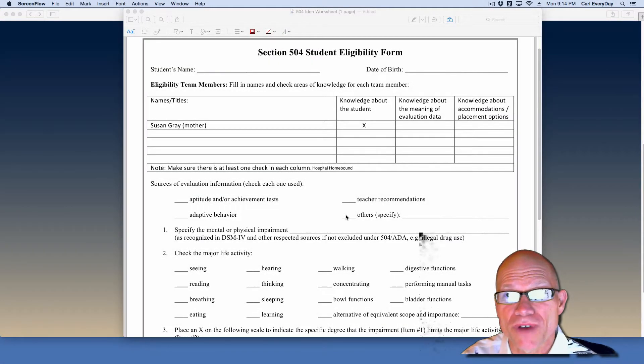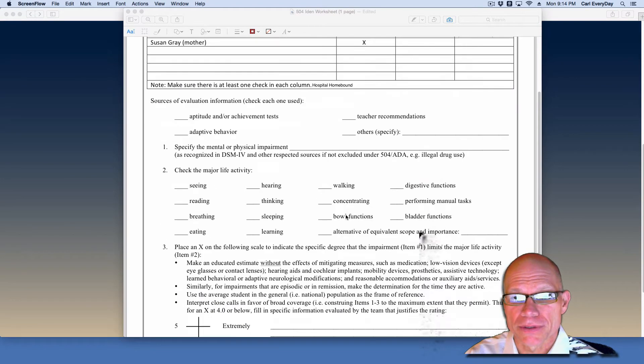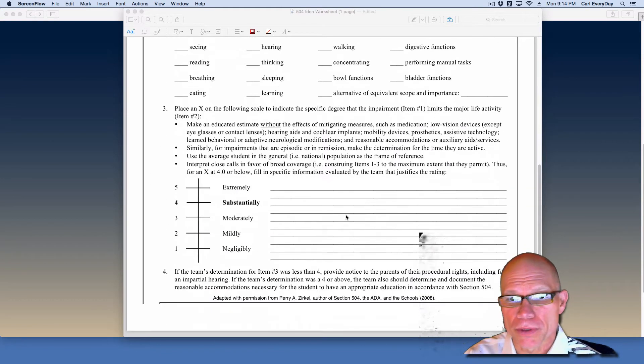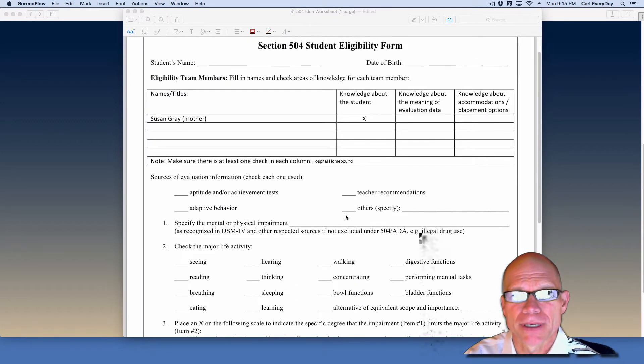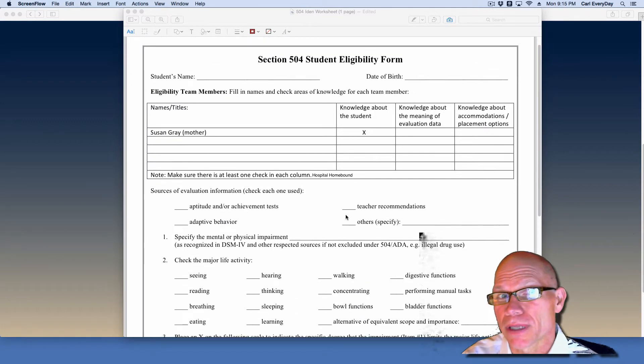This is a Section 504 student eligibility form that was included in an article written by Perry Zirkle. The bottom of this says 2008 but I believe it was 2009 in Teaching Exceptional Children. It's an article that we have to read for class.